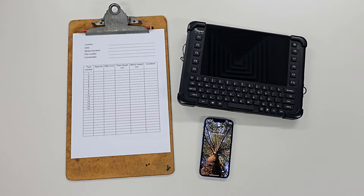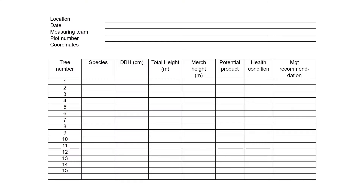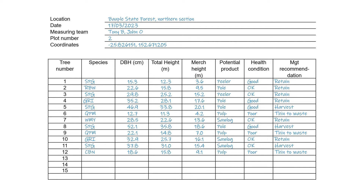You'll also need some way of recording the DBH data. This can be paper and pencil, pre-prepared printed tables, or a tablet or smartphone. You should always record the location of the forest, date, names of the measuring team, plot number and coordinates, species, DBH, and height. Then, depending on the purpose of the forest measurement, you might also include parameters such as merchantable height, potential product, health condition, or management recommendations.